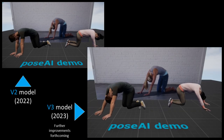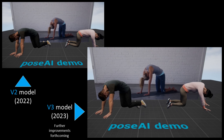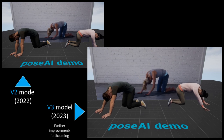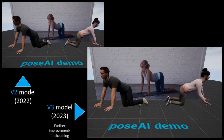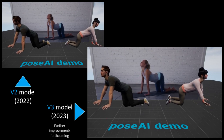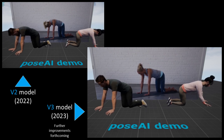This release includes our initial version 3 model for full body. As you can see, it does a better job tracking these poses and properly captures the bending spine.